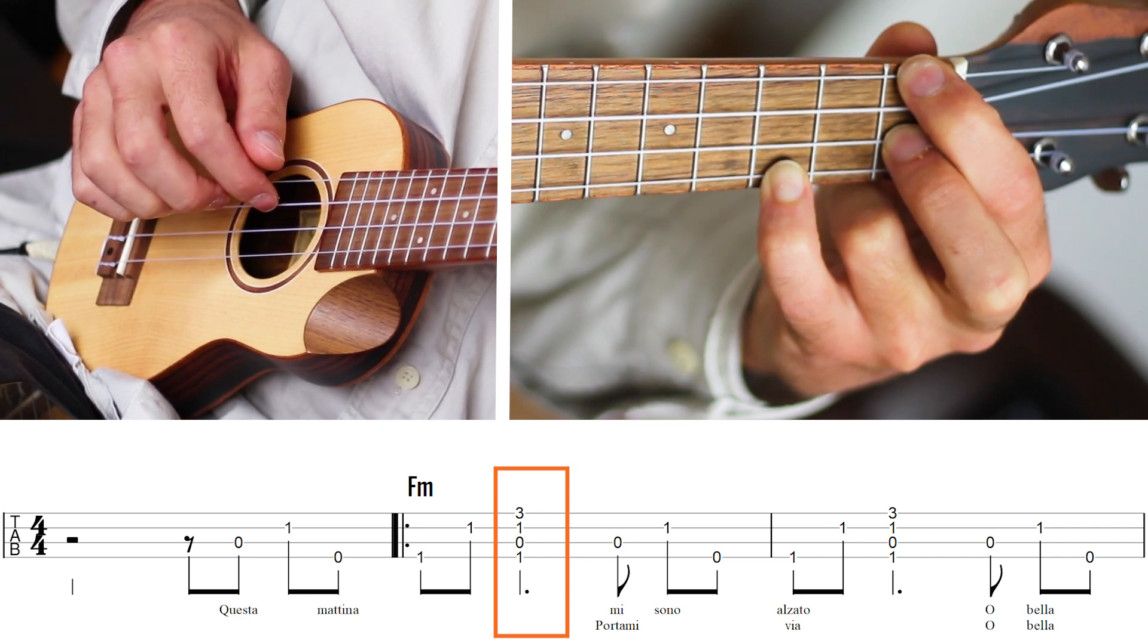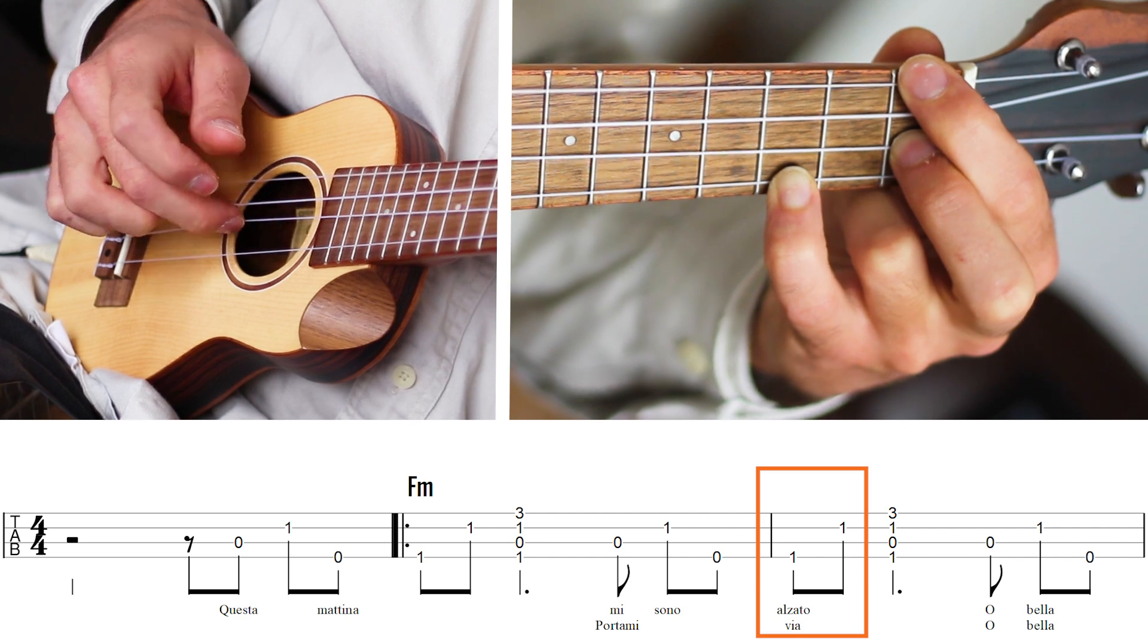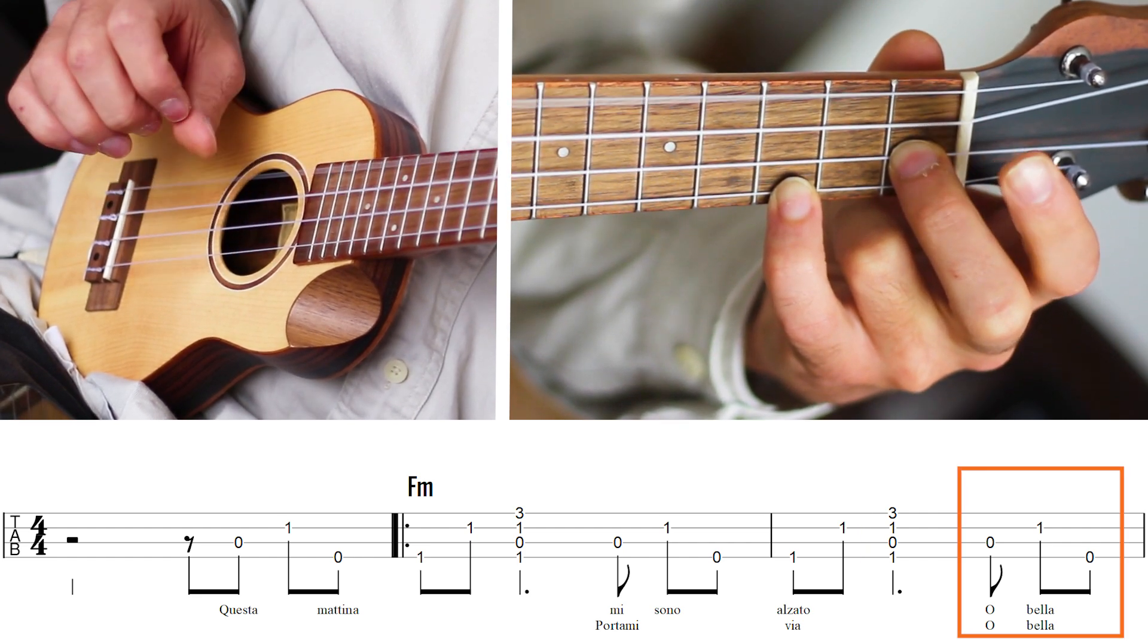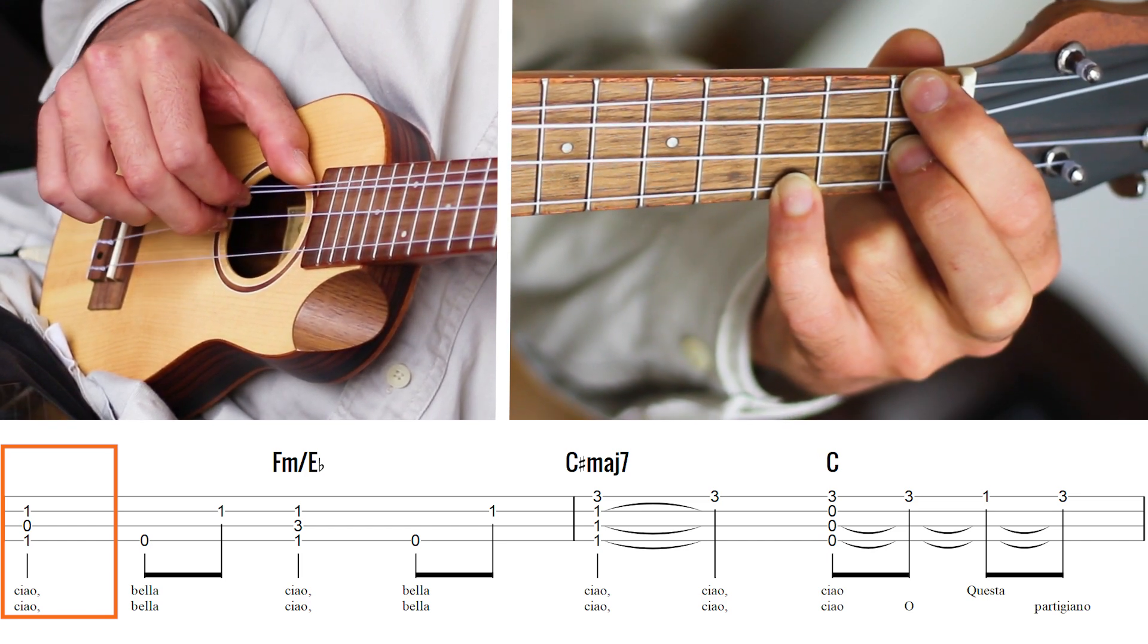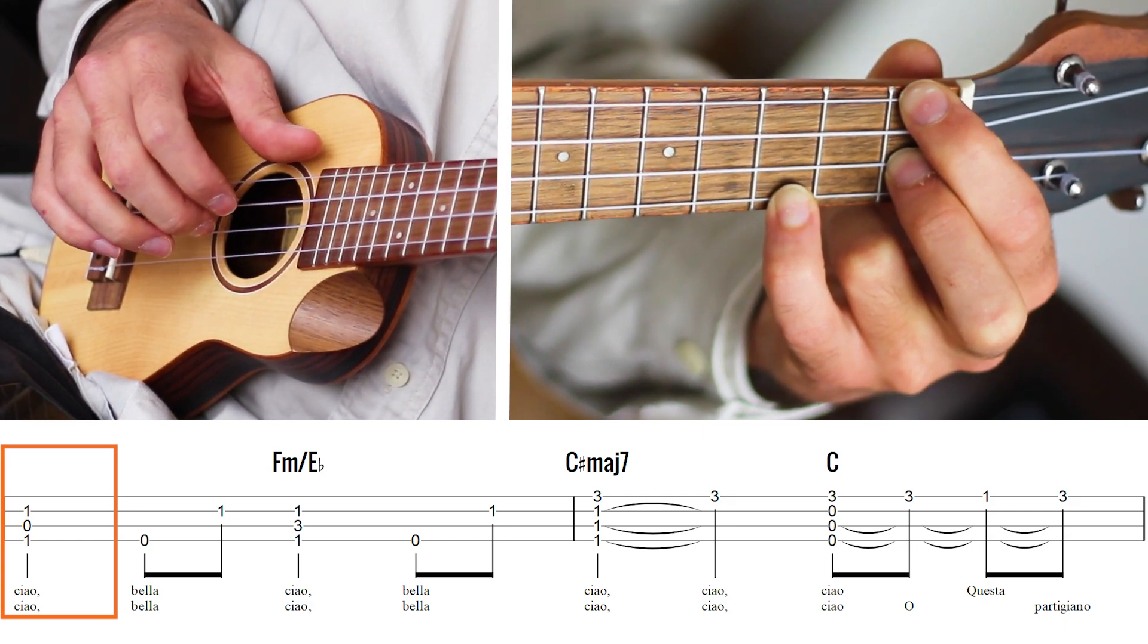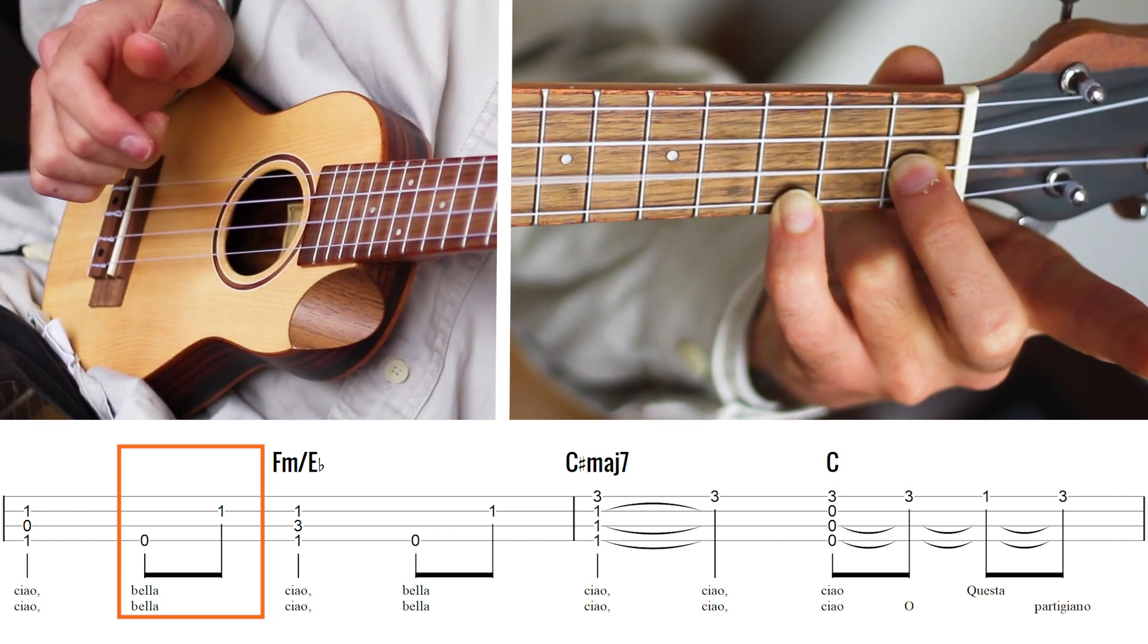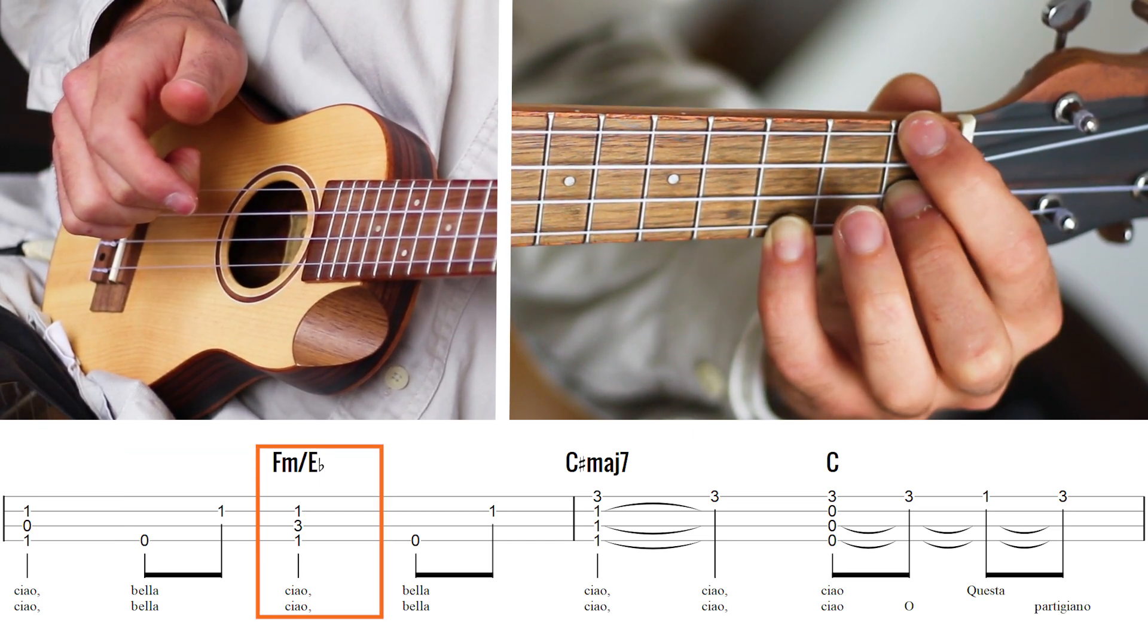So we repeat the same thing one more time, and after that we start the same way, but here we go on the second line now, where I'm just plucking the upper three strings, avoiding the A string. And after that I'm removing the pointing finger of the left hand.